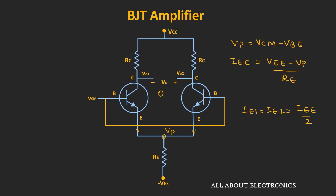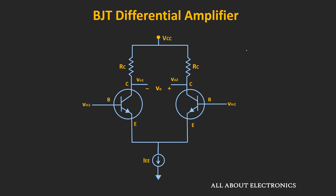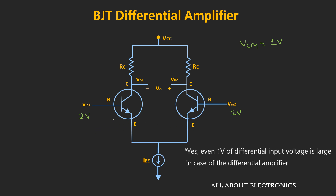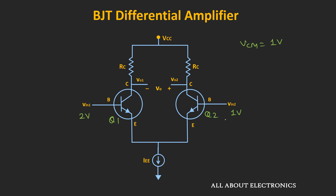Let's say a 1V common mode signal is already present at both inputs, and on top of it, a +1V is applied at Vin1. That means Vin1 = 2V while Vin2 = 1V — so a 1V differential input is present between the two input terminals. Because of this large differential input voltage, transistor Q1 will draw the entire current IEE, and transistor Q2 will remain off.